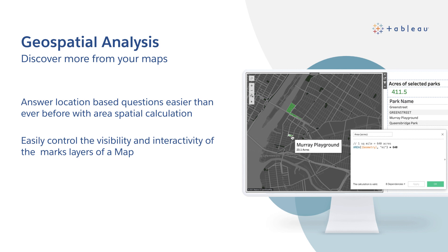New things in our geospatial analysis: we've got an area spatial calculation. You can now measure the square area of your selection on a map in units that you specify. This, combined with the power of spatial joins, makes answering location-based questions easier than ever. For example, you can now easily calculate the total acres of multiple parks you've selected on a map, or a business could use this to calculate population densities to inform about where to place a store. Also, when viewing a worksheet or dashboard that includes a map, consumers now have the flexibility to control the visibility and interactivity of that marks layer without editing the workbook. When enabled by the author, users can simply use the new toggle settings to customize the map view to best answer their own location questions and analysis.